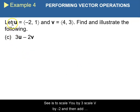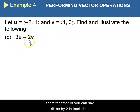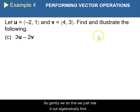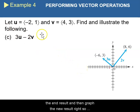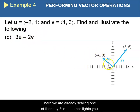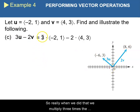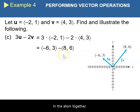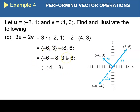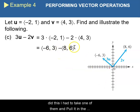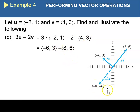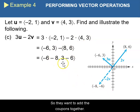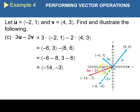For part c, we scale u by 3 and v by negative 2, then add them together — equivalently, scale v by 2 and subtract. We multiply 3 times the components of u and 2 times the components of v, then add them together to find the result. Scaling u by 3 gives ⟨−6, 3⟩ and scaling v by −2 gives ⟨−8, −6⟩. Adding the components together gives ⟨−14, −3⟩, and that is our new vector.